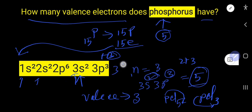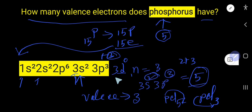In the third energy level, there is an empty 3d subshell. In the excited state, phosphorus electrons move from 3s to 3d, giving five unpaired electrons. Phosphorus breaks the octet rule, and thus phosphorus can show a valence of 5.